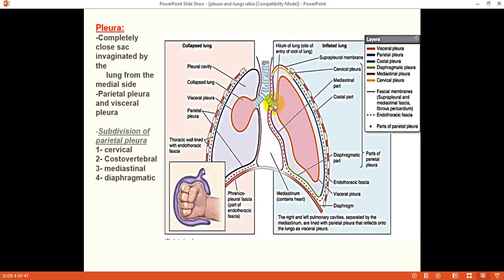At the hilum or root of lung on the medial surface where structures are passing in the lung or exiting the lung, the visceral pleura is reflected as parietal pleura.